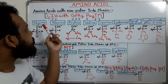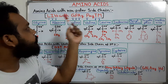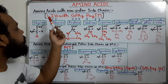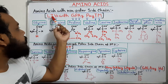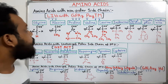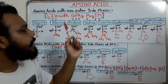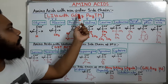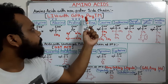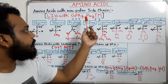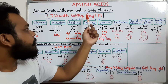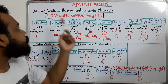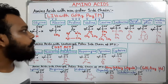Here the first letters help us recognize different amino acids. 'LIV': L indicates leucine, I indicates isoleucine, and V indicates valine. Next, 'GPA': G indicates glycine, P indicates proline, A indicates alanine. Next, 'PTM': P for phenylalanine, T for tryptophan, and M for methionine. So with the sentence 'Live with GPA and PTM,' we can memorize all nine non-polar side chain amino acids.